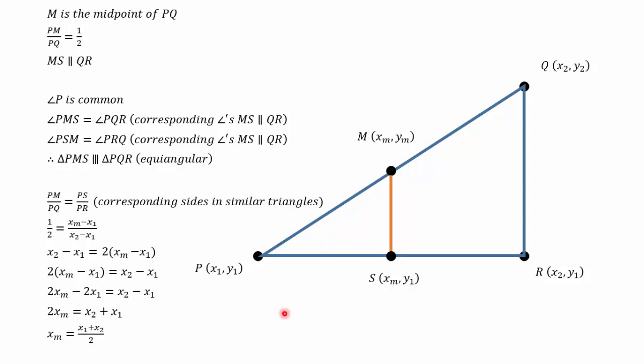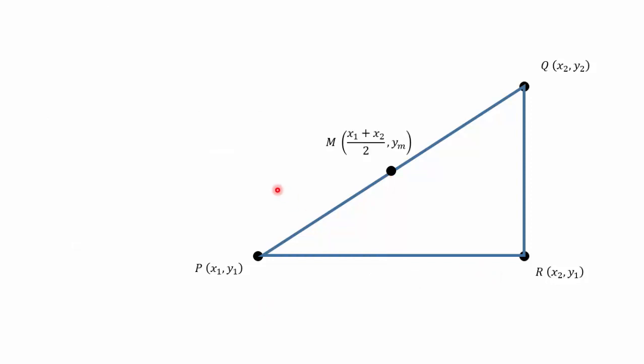We now need to do a similar thing for the Y. So I've found my x coordinate for M. I now need to determine my y coordinate for M. And once I've done that, I've found the midpoint formula.